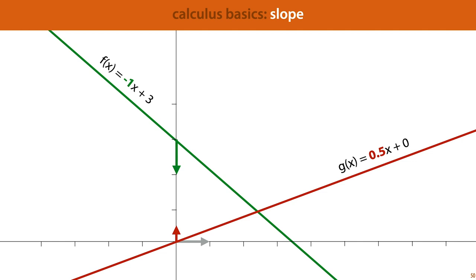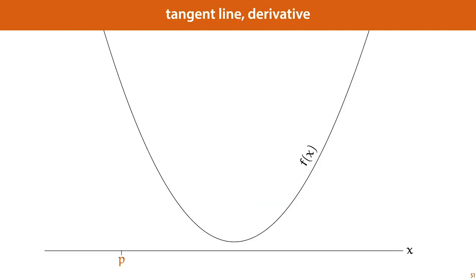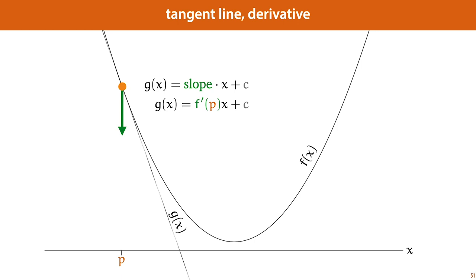If we have a function that isn't linear, we can find at a particular point on that function a tangent line. Here we've highlighted point p, and at point p there is one line — indicated by the dotted line — that just touches that function only at point p. This is called the tangent line. This is itself a function g of x, and because it's a linear function, it's defined by a slope multiplied by the argument to which a constant is added. In one-dimensional calculus, we call this slope the derivative of the function — we express it as f' and that's the derivative of f.